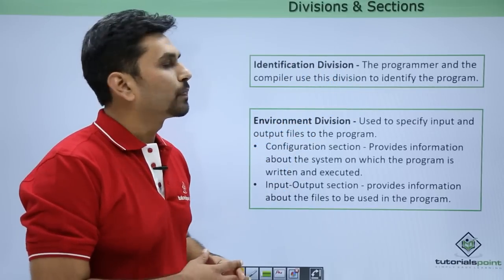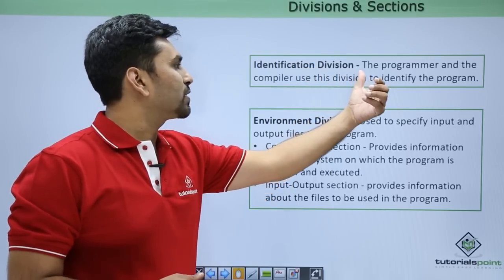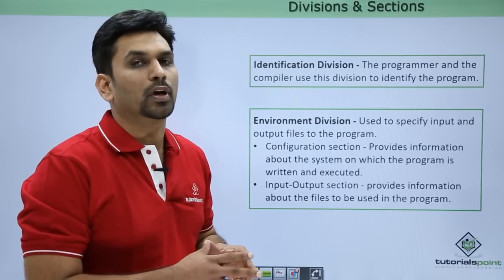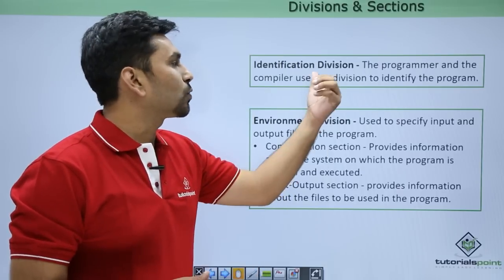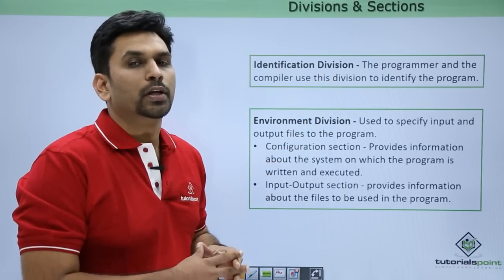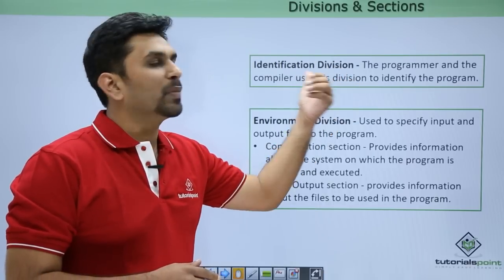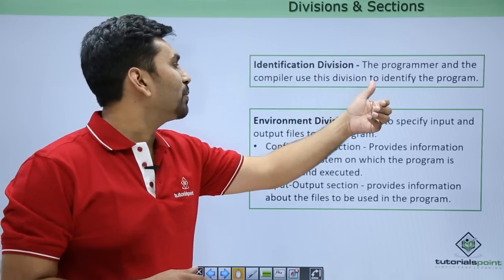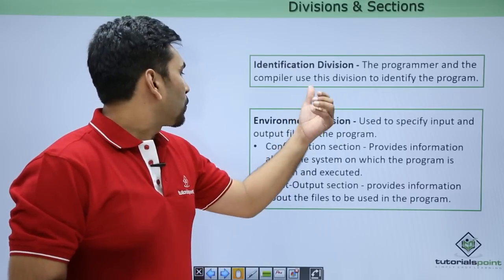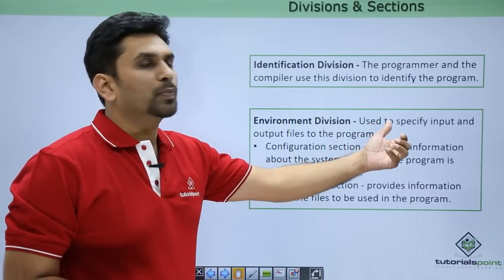The identification division is the only mandatory division inside a COBOL program. If it is not coded, your COBOL program never gets executed. The reason is that in this division we mention the program name as well as the programmer name. Next comes the environment division.